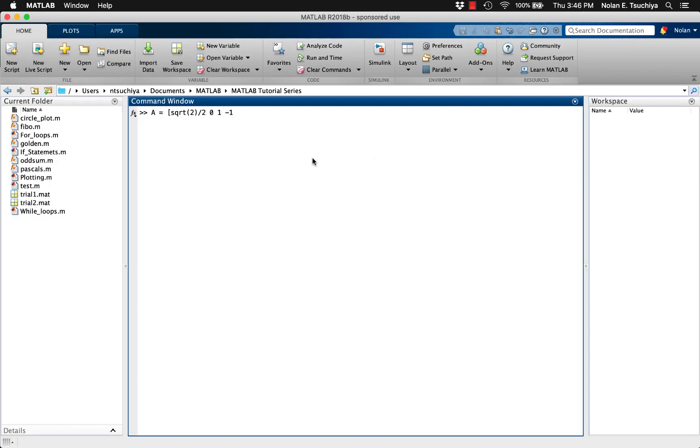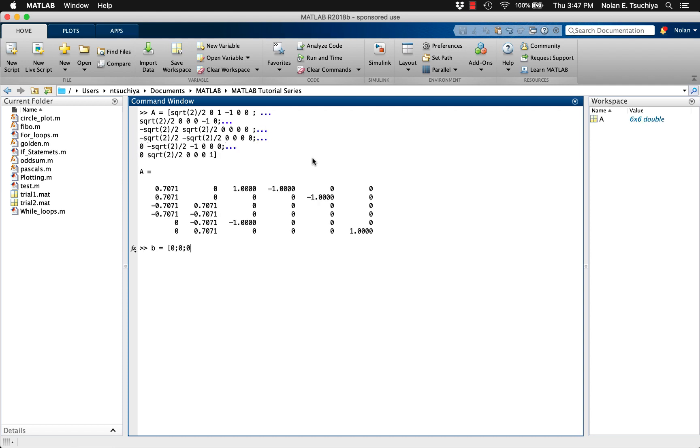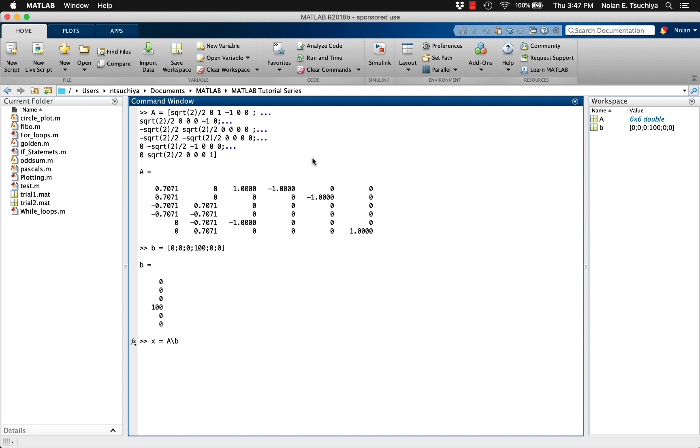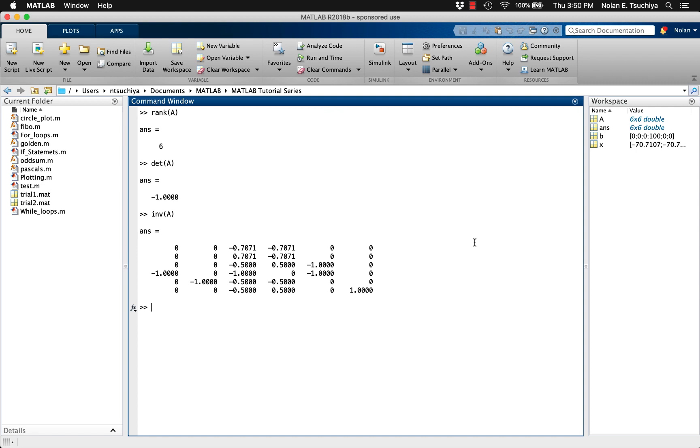Once we're finished completing the matrix equation, we can let MATLAB handle the computations by using the backslash function to return the solution to the unknowns vector X, which contains all six unknowns. We can easily verify that the A matrix is full rank by either using the rank function to see if the matrix has a rank 6, or the determinant function to see if the determinant is non-zero.